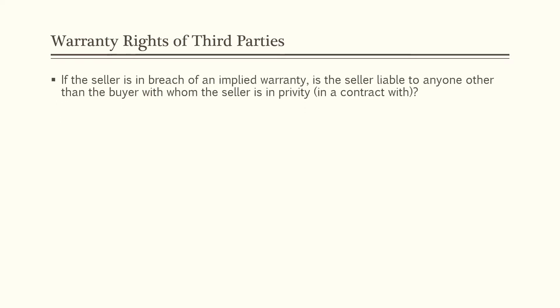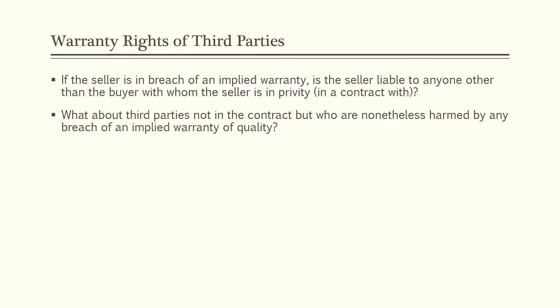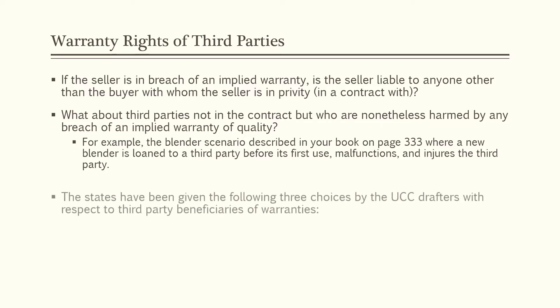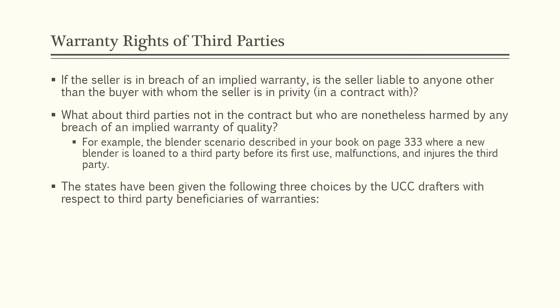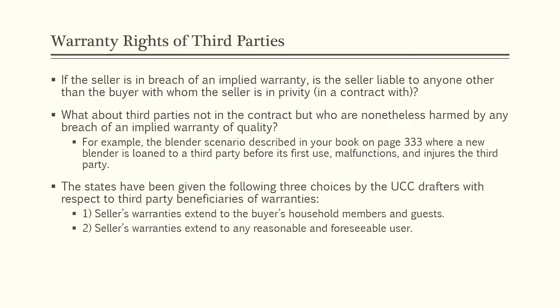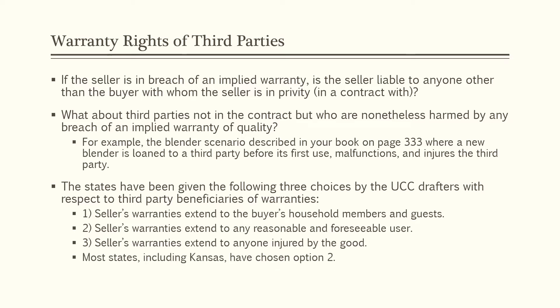Now we'll discuss warranty rights of third parties. If a seller is in breach of an implied warranty, is the seller liable to anyone other than the buyer with whom the seller is in privity? What about third parties not in the contract but harmed by a breach of an implied warranty — for example, a blender loaned to a third party that malfunctions and injures them before its first use? The states have been given three choices by the UCC drafters: one, seller's warranties extend to the buyer's household members and guests; two, seller's warranties extend to any reasonable and foreseeable user; or three, seller's warranties extend to anyone injured by the goods. Most states, including Kansas, have chosen option two.